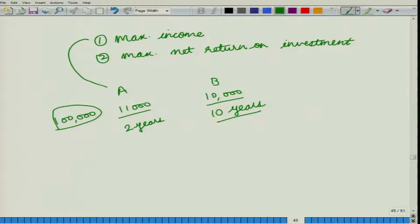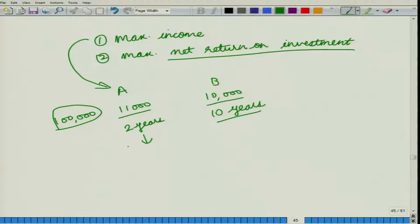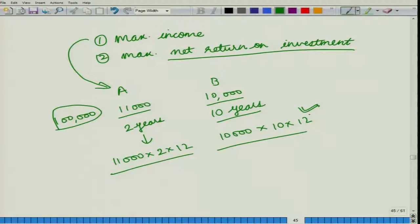Now, if we looked at maximum income, income would tell us that at every time t, say every month, in the case of plan A we are getting an income of 11,000 rupees, whereas in the case of plan B we are getting only 10,000 rupees. So if we wanted to maximize our income, we would be choosing plan A. Whereas if we looked at maximum net return on investment, in the case of plan A you are getting a total return of 11,000 multiplied by 2 years multiplied by 12 months. In this case, you are getting 10,000 multiplied by 10 years multiplied by 12 months. So obviously, the net return that you are getting out of plan B is much greater than that of plan A, because in the case of plan B you are getting it over a longer time span.